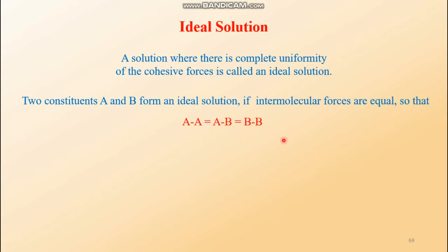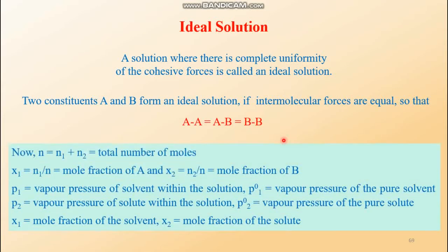When these three intermolecular forces are equal, the solution must behave ideally. Some notation: the overall number of moles is n, contributed by both solvent and solute. Component A is present as n1 moles and B as n2 moles. Their mole fractions are x1 = n1/n for A and x2 = n2/n for B.